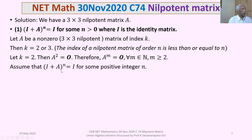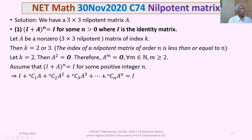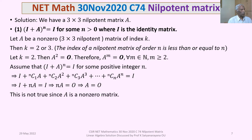Assume (I + A)^n = I for some positive integer n. Expanding by the binomial theorem: I + nC1·A + nC2·A² + nC3·A³ + ... + A^n = I. Since A² = 0, A³ = 0, and all higher powers are 0, we are left with I + n·A = I, which implies n·A = 0. Since n is a positive integer, this forces A to be the zero matrix — a contradiction, because A is non-zero.